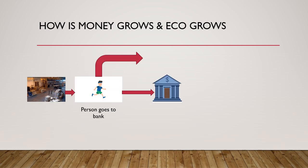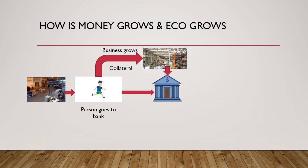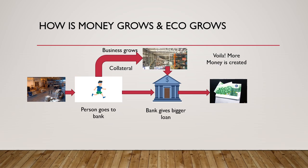Let's see how money grows in this system. The person who takes the loan from the bank invests in his business, and his business luckily grows. Now the person sees future demand and approaches the bank for more loan. Since the business has already grown and the person has a bigger collateral to offer, the bank gives him a bigger loan — and voila, more money is created in the economy.